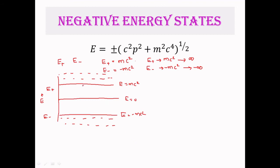These two branches are separated by a forbidden gap of width 2mc² — the difference from 0 to mc² is mc², and from 0 to −mc² is also mc², so the total gap is 2mc². Now it is very difficult to imagine such negative energy states, because even a small perturbation could cause a transition of an electron in a positive energy state to a negative energy state.